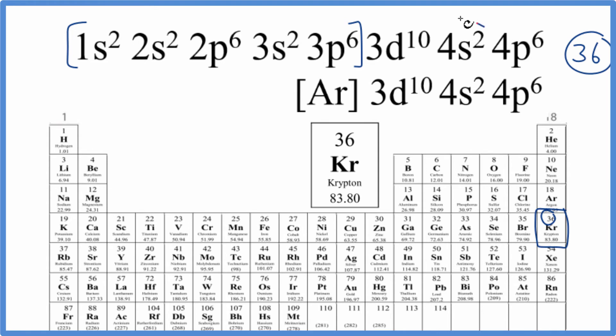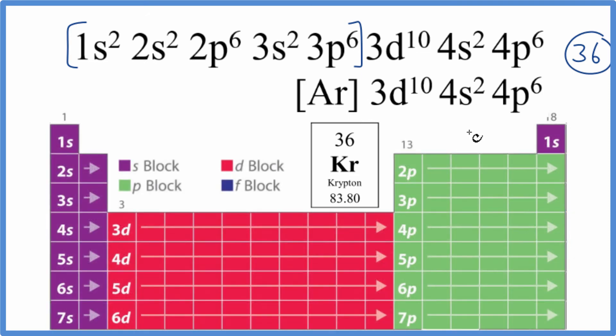Note that sometimes you'll see the 4s before the 3d—both of these notations are used. We could also look at the periodic table broken up into orbital blocks. We're looking for something that ends in 4p⁶.